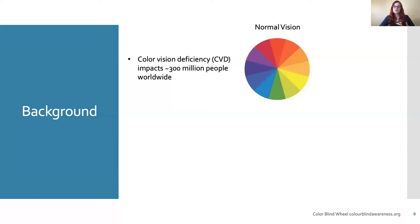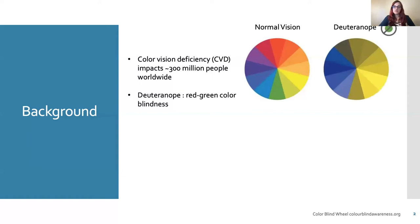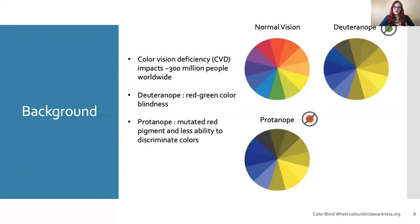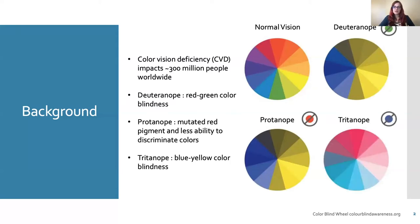There are three different types of CVD. Deuteranopia is the most common and also known as red-green color blindness. Protanopia is less common than deuteranopia and described as a mutated red pigment with less ability to discriminate between colors. Tritanopia is relatively rare and also known as blue-yellow color blindness.